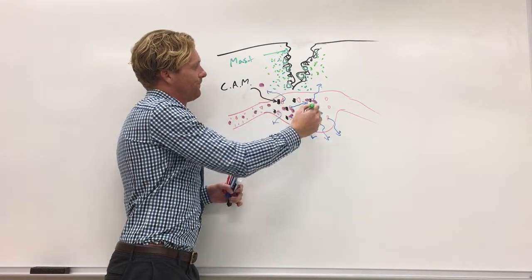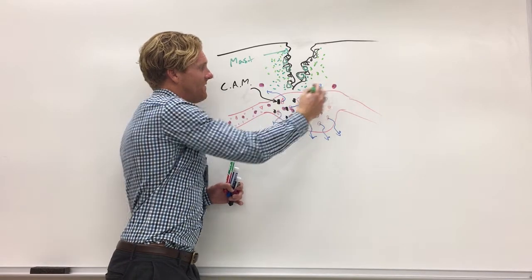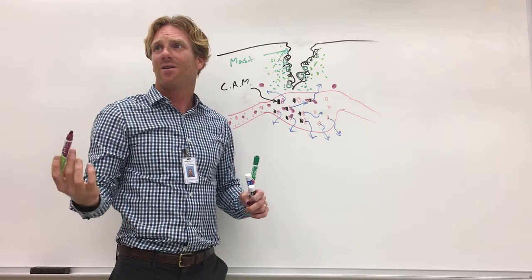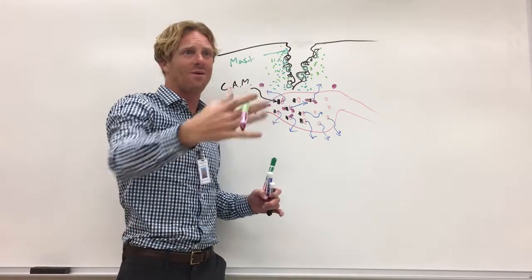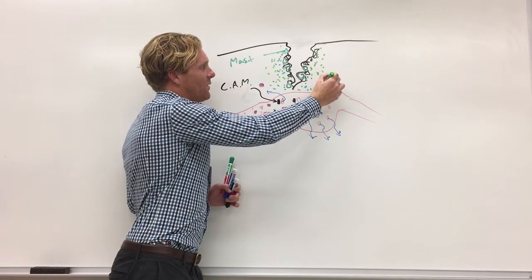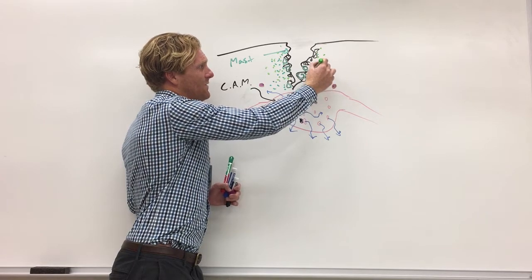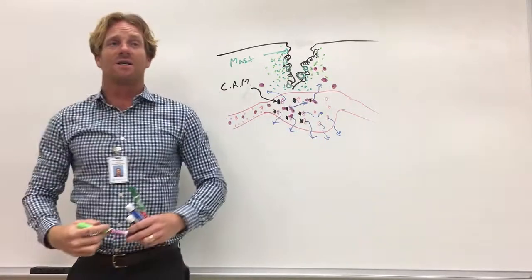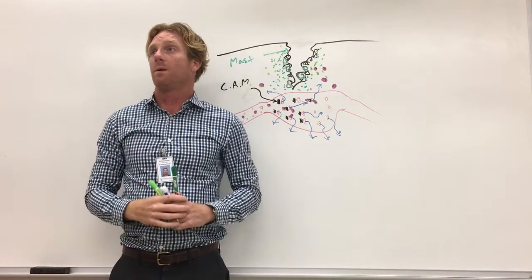Now we have all these neutrophils, and what they do after they exit the vessel is follow the chemical trail of bacteria. Just like a dog following a scent, these guys follow the chemical trail and start eating these bacteria through phagocytosis. That's exactly what we want them to do.